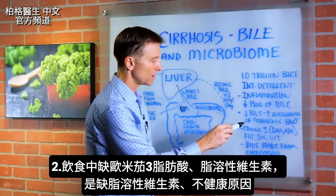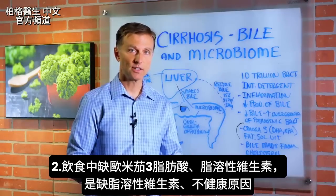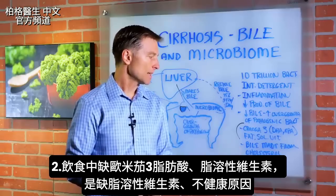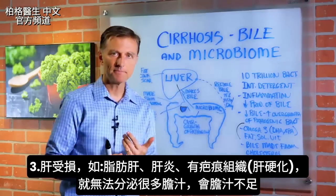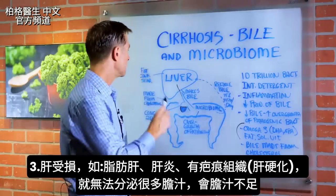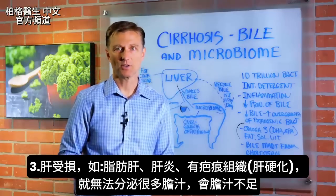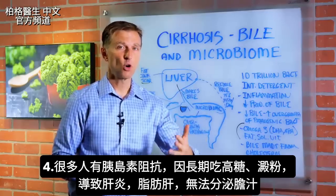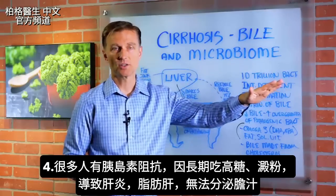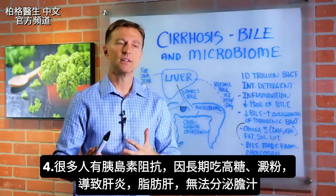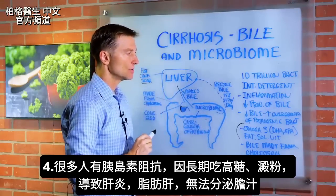It could also be that you're not taking enough omega-3 fatty acids or enough fat-soluble vitamins from your diet — that's another reason why you can have a deficiency of those vitamins and related health factors. Now, if the liver is damaged — let's say it's fatty, it's inflamed, you have hepatitis, or you have scar tissue, cirrhosis — you're not going to be able to produce as much bile, so you'll have a bile deficiency from that alone. Many people who have insulin resistance because they're eating too much chronic elevation of sugar and starch develop inflammatory conditions of the liver, and then you start getting problems with fatty liver and can't produce bile.